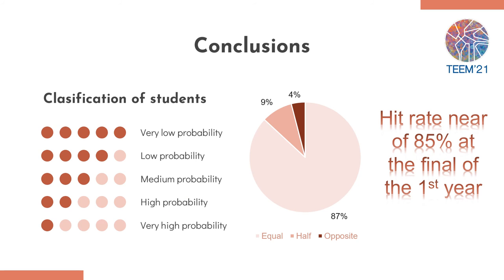When we apply the system to the data collected from students, weighted by the tutors, we found that more or less 15% of students have a high or very high probability of dropping out in the first year.